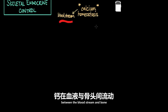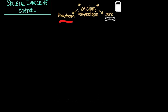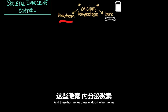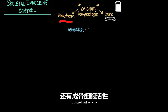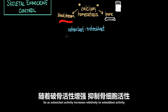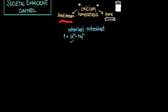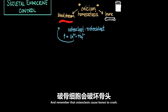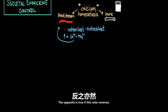Calcium homeostasis — the flow of calcium between the bloodstream and bone — is actually under endocrine or hormonal control. These hormones alter the ratio of osteoclast activity to osteoblast activity. As osteoclast activity increases relative to osteoblast activity, there is an increase in the liberation of calcium and phosphate from bone into the bloodstream, because osteoclasts cause bones to break down.